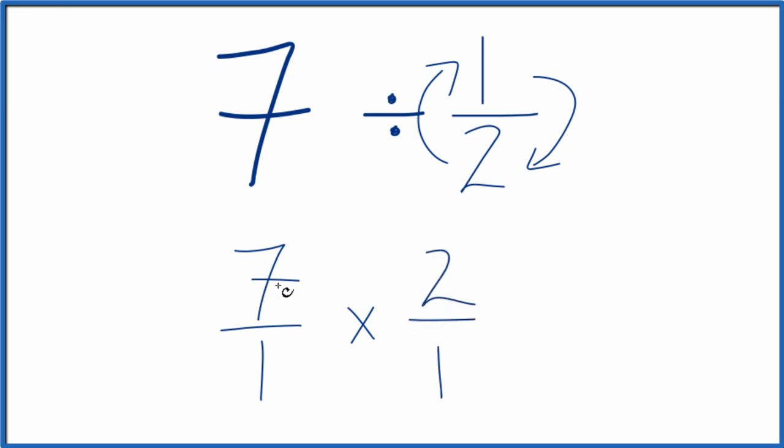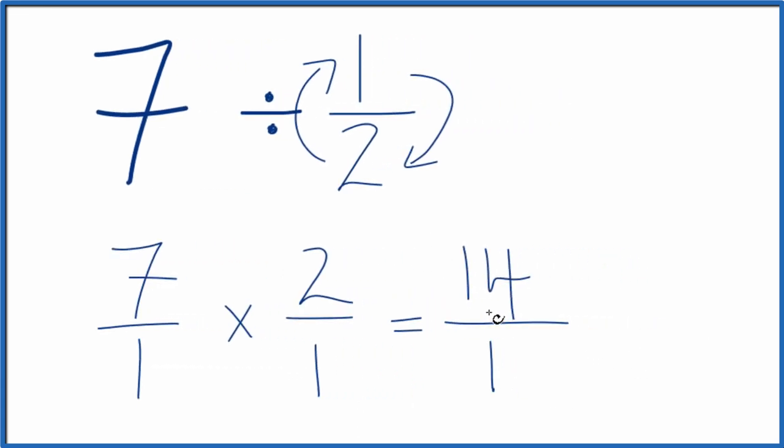So now all we do, 7 times 2, that equals 14, and 1 times 1 equals 1. This simplifies down to just 14. We're dividing by 1 here. So 7 divided by 1 half equals 14.